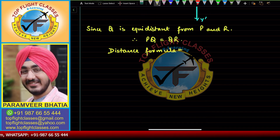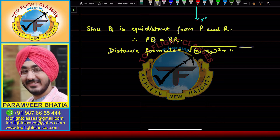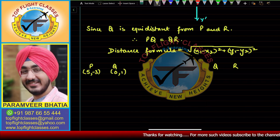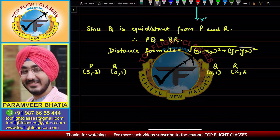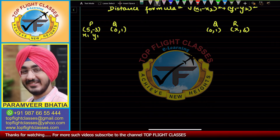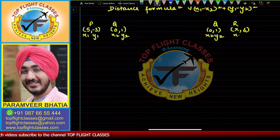The distance formula is given by the square root of (x1 − x2)² + (y1 − y2)². For PQ, the coordinates are P(5, -3) and Q(0, 1), so x1=5, y1=-3, x2=0, y2=1. For QR, the coordinates are Q(0, 1) and R(x, 6), so x1=x, y1=6, x2=0, y2=1.